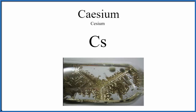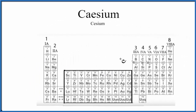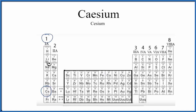To write the Lewis structure, we need to know how many valence electrons are around the cesium atom. We can go to the periodic table — cesium is way down here — and it's in group one. All of the elements in group one on the periodic table have one valence electron.